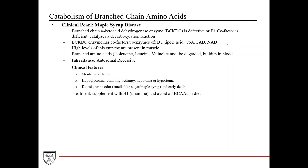A quick clinical pearl here for branched-chain amino acids: maple syrup disease. This involves the branched-chain alpha-keto acid dehydrogenase enzyme being defective, or a vitamin B1 deficiency causing impaired function since B1 is a required cofactor. The other cofactors for this enzyme are lipoic acid, CoA, FAD, and NAD. High levels of this enzyme are present in the muscle, which is apparent from our previous discussion about breakdown of branched-chain amino acids in muscle tissue during fasting.